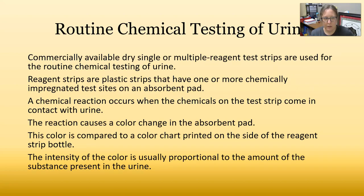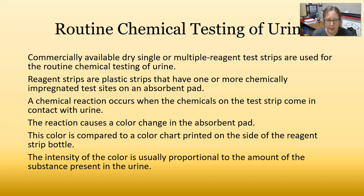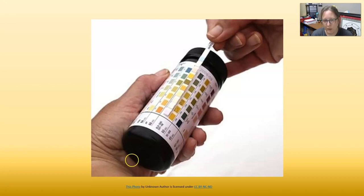For routine chemical testing of urine, commercially available dry single or multiple reagent test strips are used. These reagent strips are plastic strips that have one or more chemically impregnated tests on an absorbent pad. A chemical reaction occurs when the chemicals on the test strip come in contact with urine, causing a color change in the absorbent pad. The color is compared to a color chart printed on the side of the reagent strip bottle, and the intensity of color is usually proportional to the amount of the substance present. Here you can see the strip, the different color pads, and how they compare to a chart of color changes.